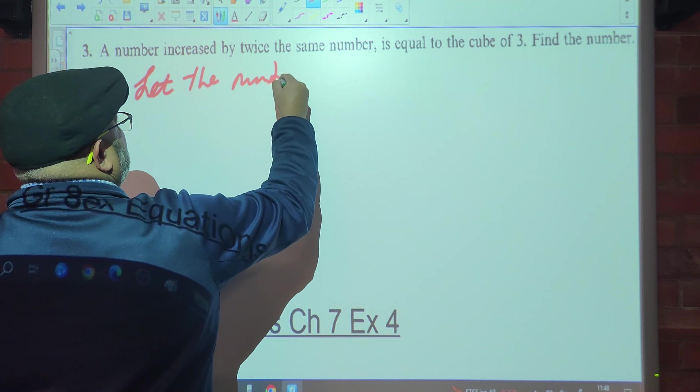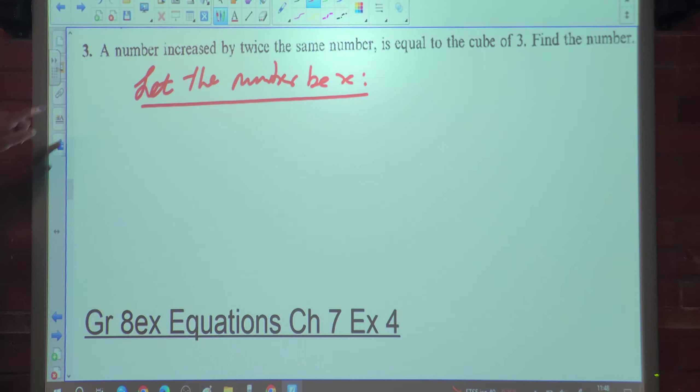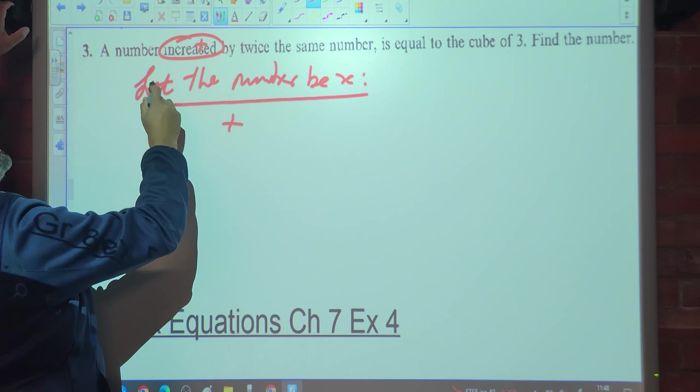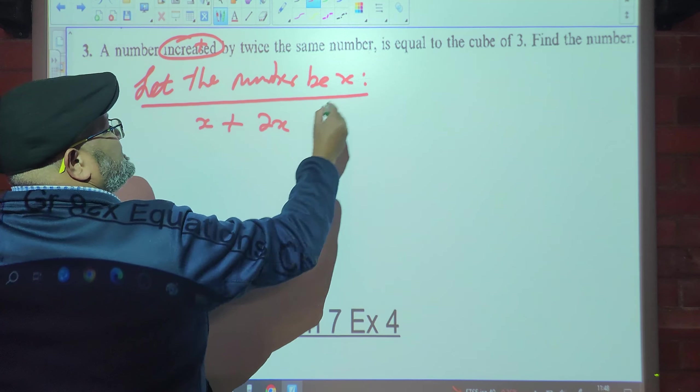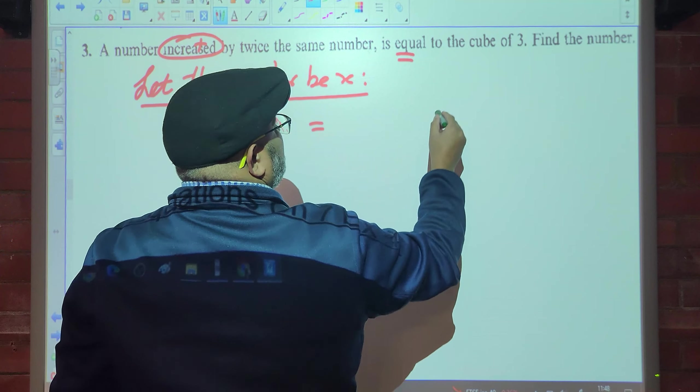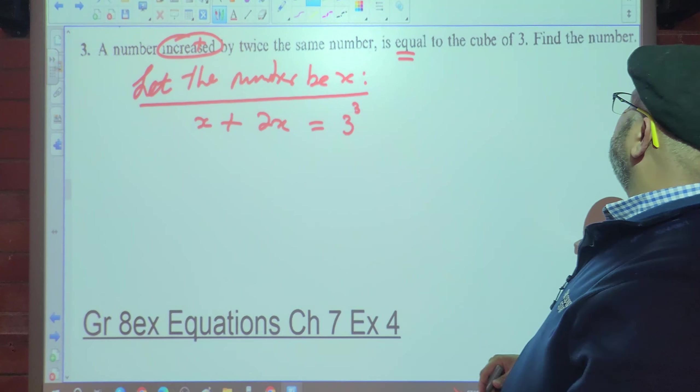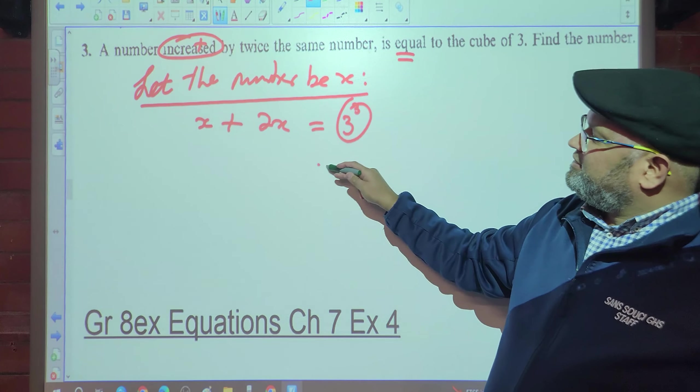Let the number be x. A number increased means what? Plus. A number increased by twice the same number: x plus twice a number would be 2x is equal to the cube of 3. 3 cubed. Find the number. What is 3 cubed? 27.